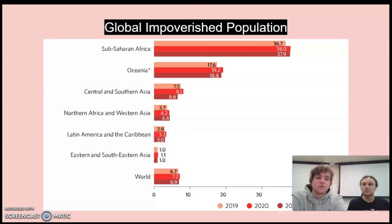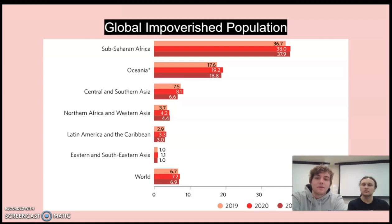Now we jump to the global impoverished population. This chart has stats for all different parts of the world. Sub-Saharan Africa is very heavily plagued by extreme poverty. Oceania is about half percentage-wise, but that's still pretty awful, followed by Central and Southern Asia, Northern Africa and Western Asia, Latin America and the Caribbean, Eastern and Southeastern Asia, and then the world overall. We can clearly see that this disproportionately affects those who live in Sub-Saharan Africa, Oceania, and countries like Indonesia.